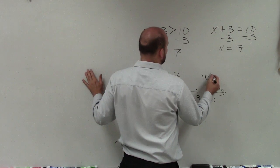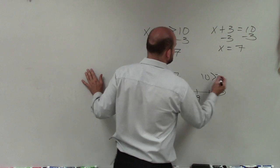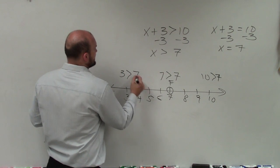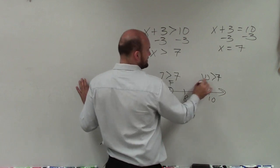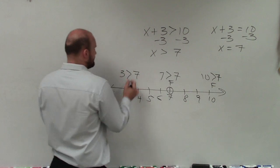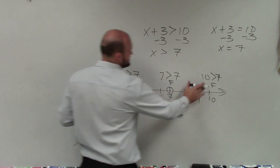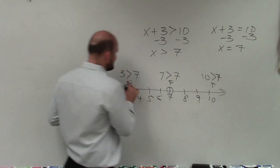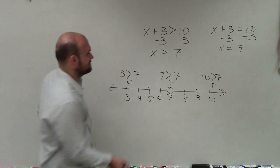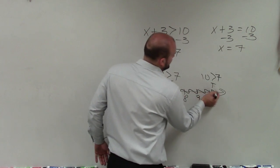But you can also plug in or evaluate using your test points. If it's true, that's where you're going to shade. 10 is obviously greater than 7, and that's true. 3 is obviously not greater than 7, so therefore it's false. Therefore, we'll shade our inequality that way.